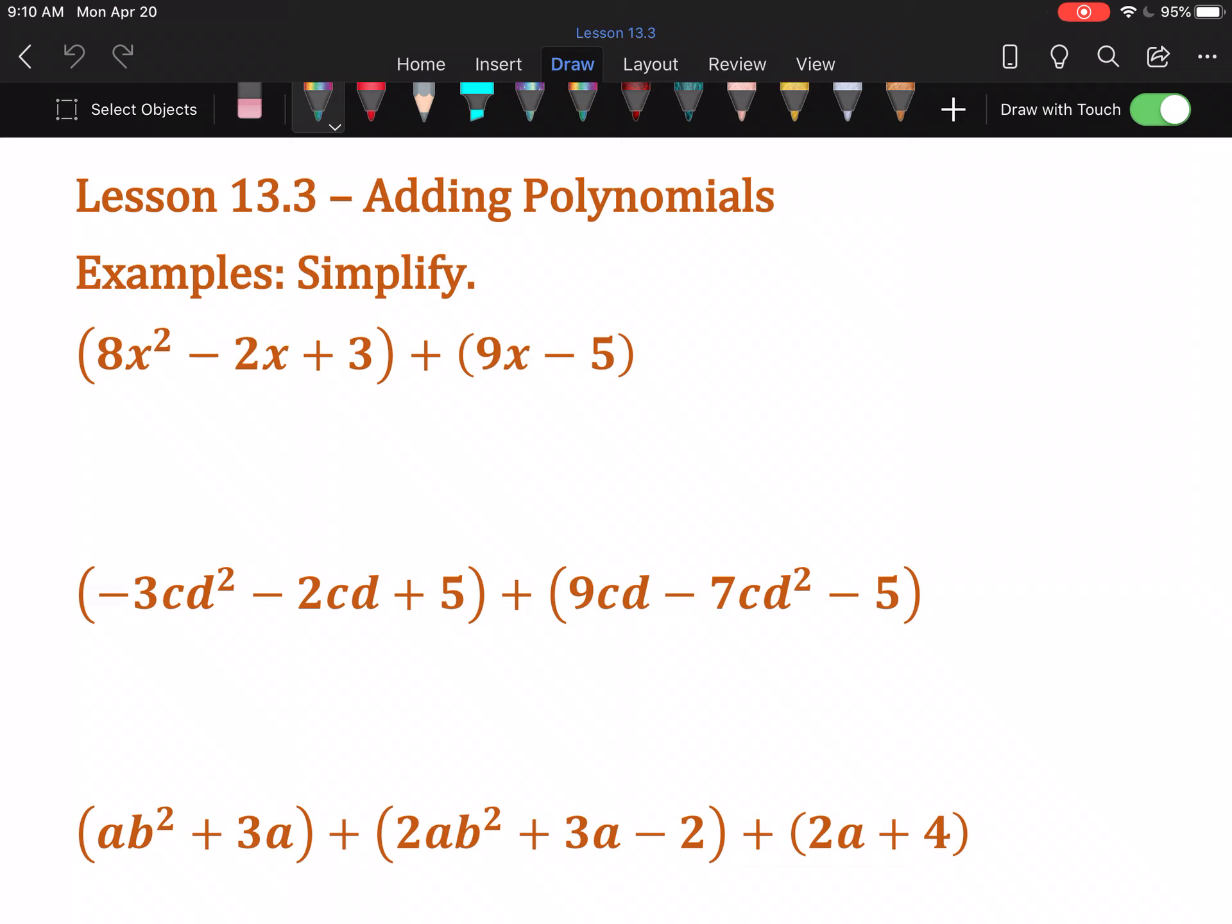This first example is the exact same thing as 8x² - 2x + 3 + 9x - 5. The plus on the 9x is not because of the plus in between them, it's because the 9x is positive. And that's why it's minus 5. And if I strip away the parentheses, this is just combining like terms from last section.